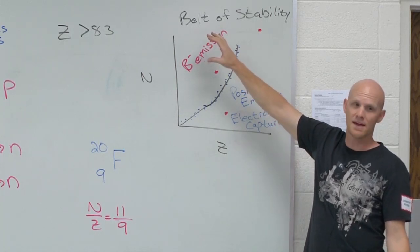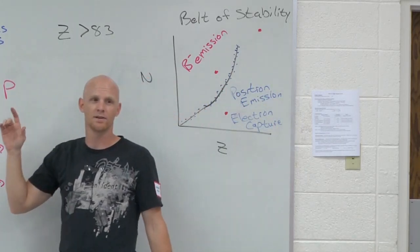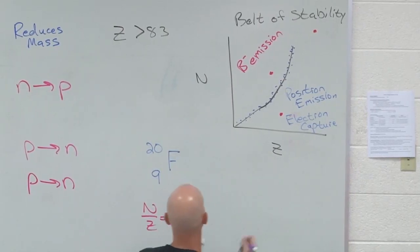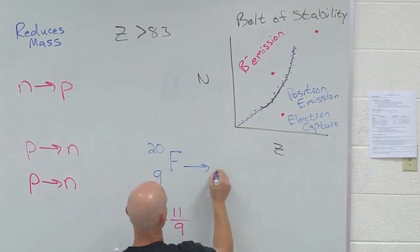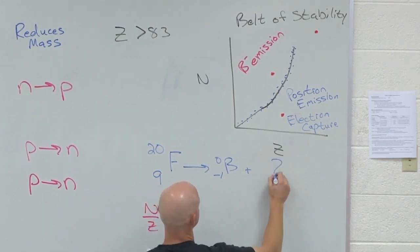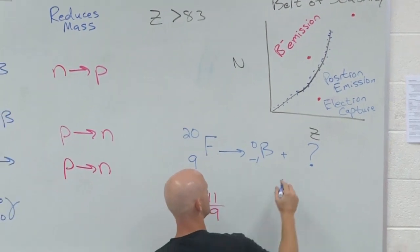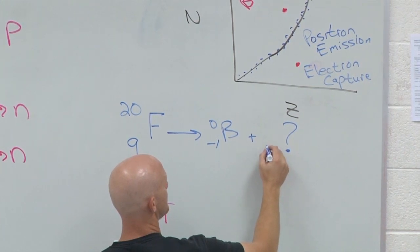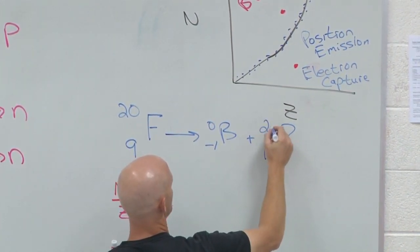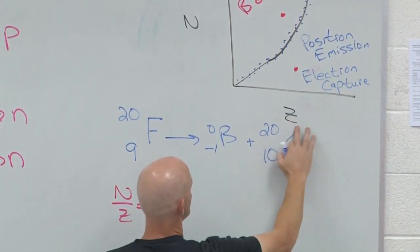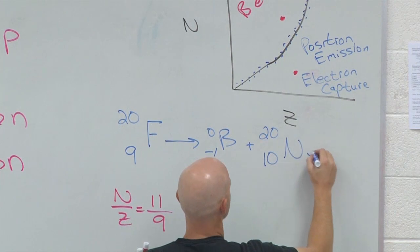He should want to do beta decay. Because that converts what into what? Neutron into a proton. So if we look here, if we have him do beta decay, that means a beta emission, so a beta particle's a product, what are you going to be left with? What will this mystery particle be? Atomic number is? And mass number is? Twenty. And that happens to be neon. Atomic number ten.